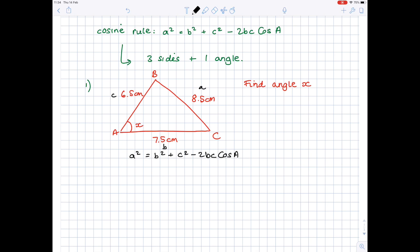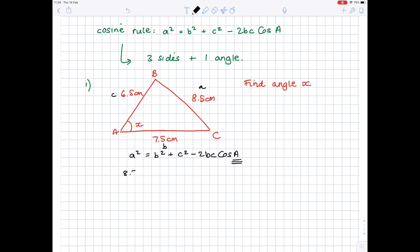We're actually looking for angle x, which is this value here, A. We're ready now to start substituting in all our values. A squared is 8.5², B squared is 7.5², plus C squared is 6.5², minus 2 times side B which is 7.5, times side C which is 6.5, times by cos A.